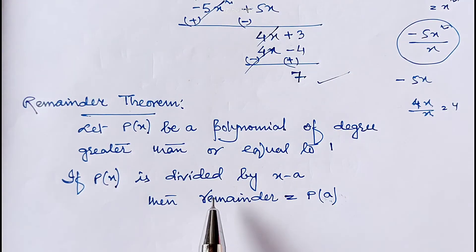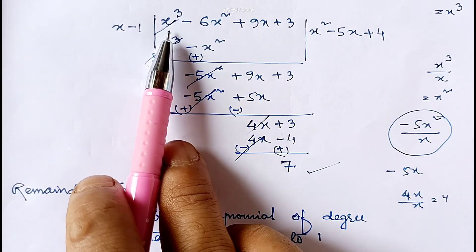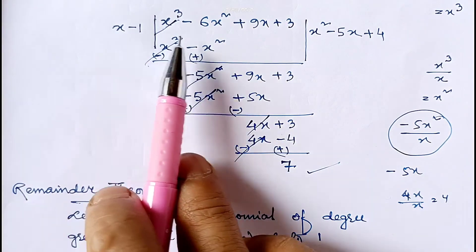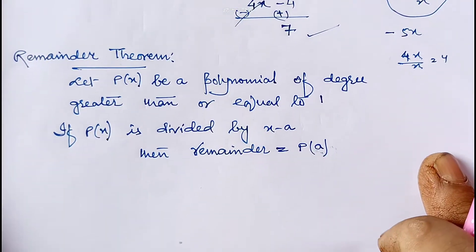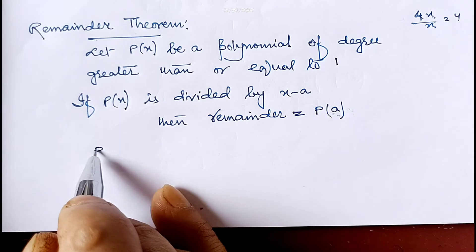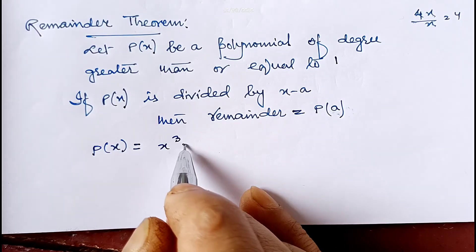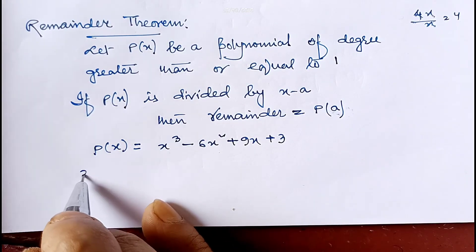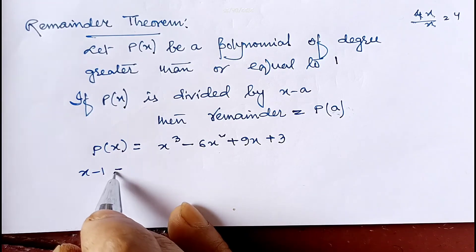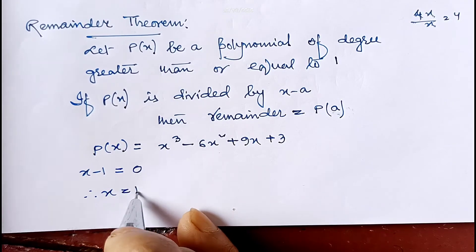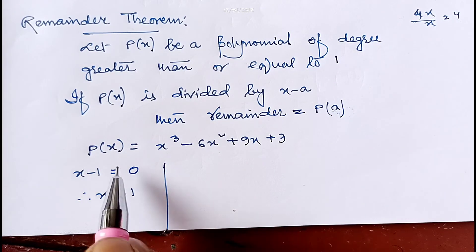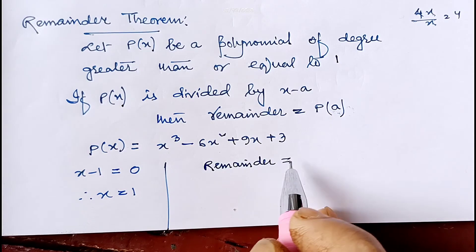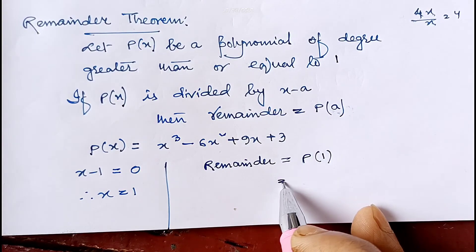Let me use the previous example to make this theorem clear. The polynomial is x³ - 6x² + 9x + 3, divided by x - 1. By the remainder theorem, since we are dividing by x - 1, we set x - 1 = 0, therefore x = 1. We will replace x with 1 to get the remainder.